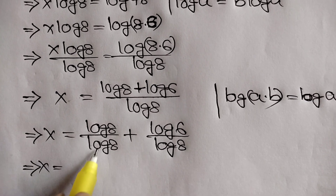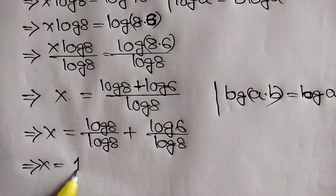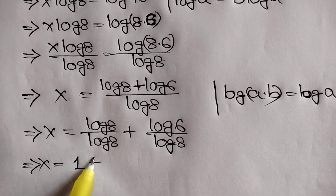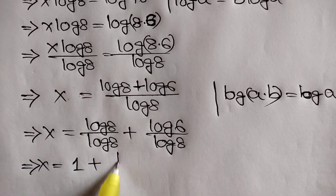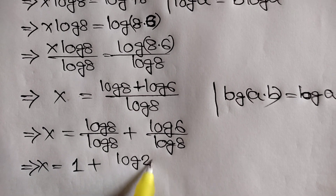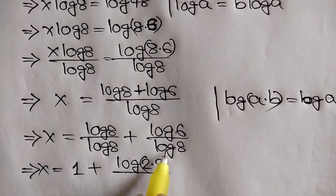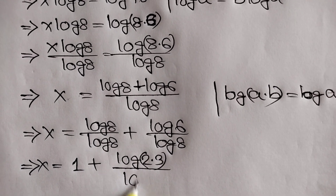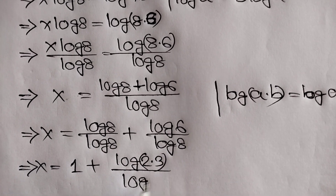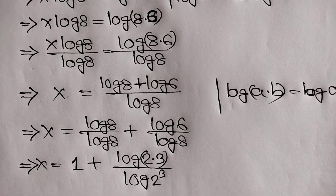Or x is equal to log of 8, which can be written as 2 times 3, over log of 8, which can be written as 2 cubed.